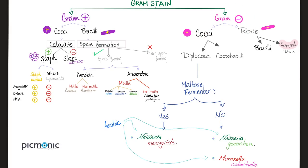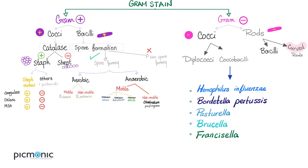Gram-negative bacteria are cocci or rods. If you are a coccus, are you a diplococcus or a coccobacillus? If diplococcus: do you ferment maltose? Yes = Neisseria meningitidis; No = Neisseria gonorrhoeae or Moraxella catarrhalis. If you are a coccobacillus — a short rod, hard to tell from a coccus — that includes Haemophilus influenzae, Bordetella pertussis, Pasteurella multocida, Brucella, and Francisella tularensis. This is today's topic.